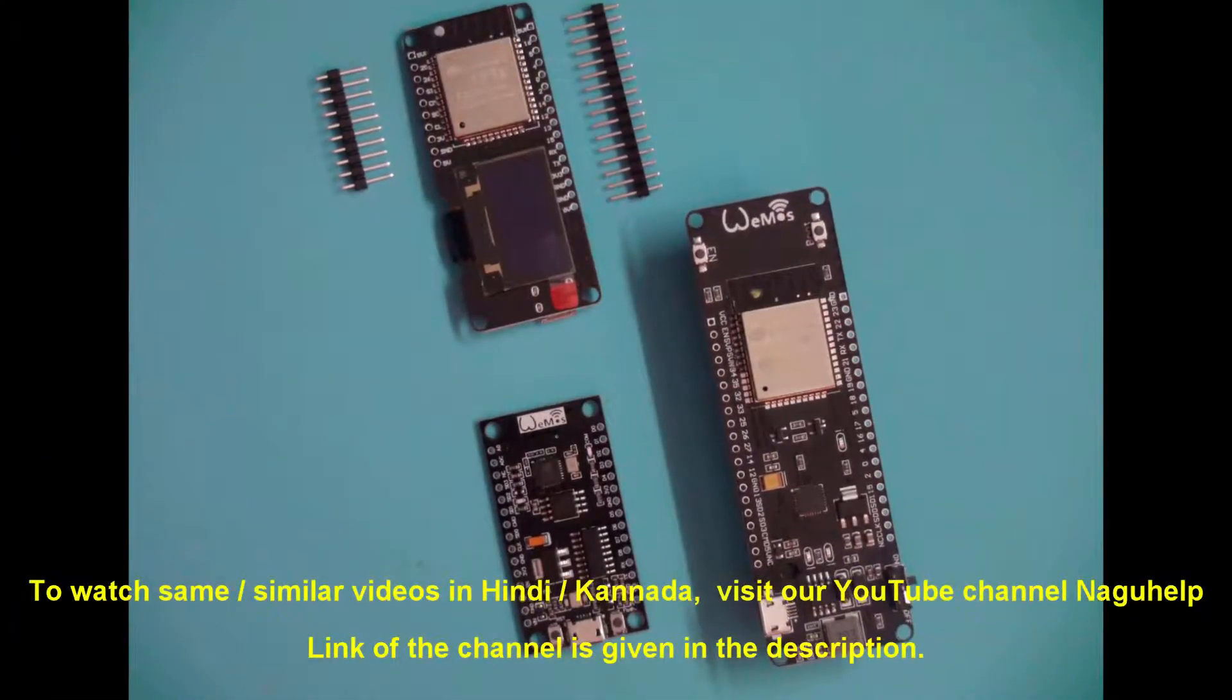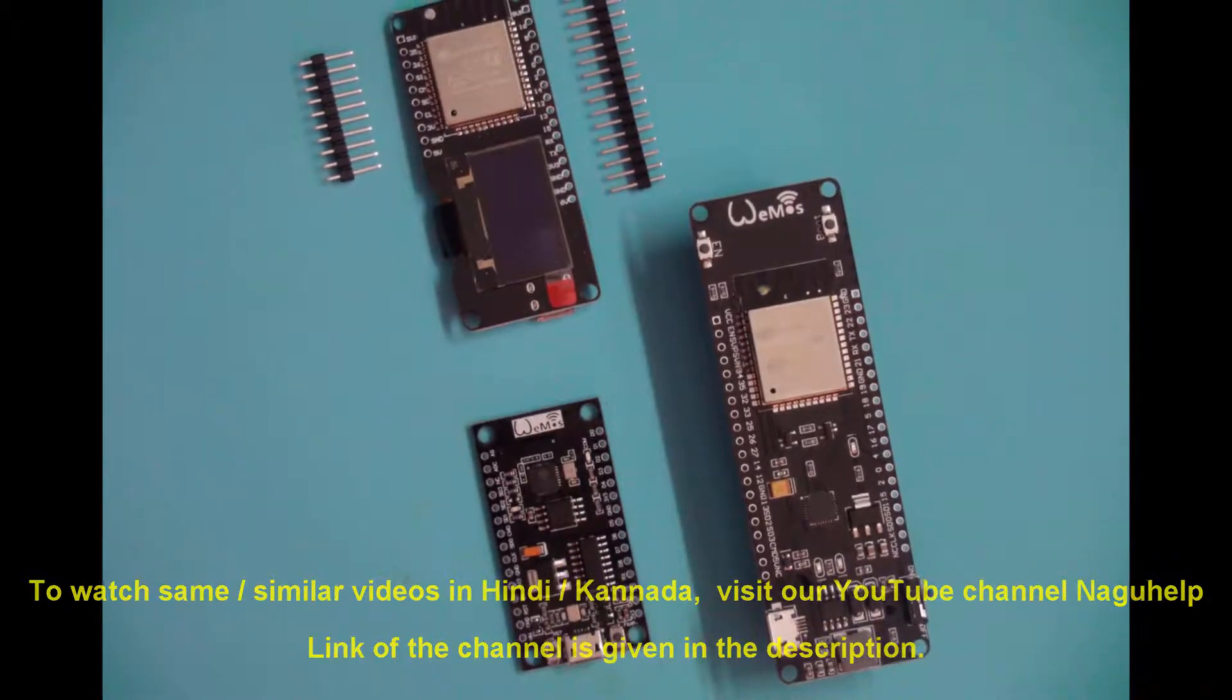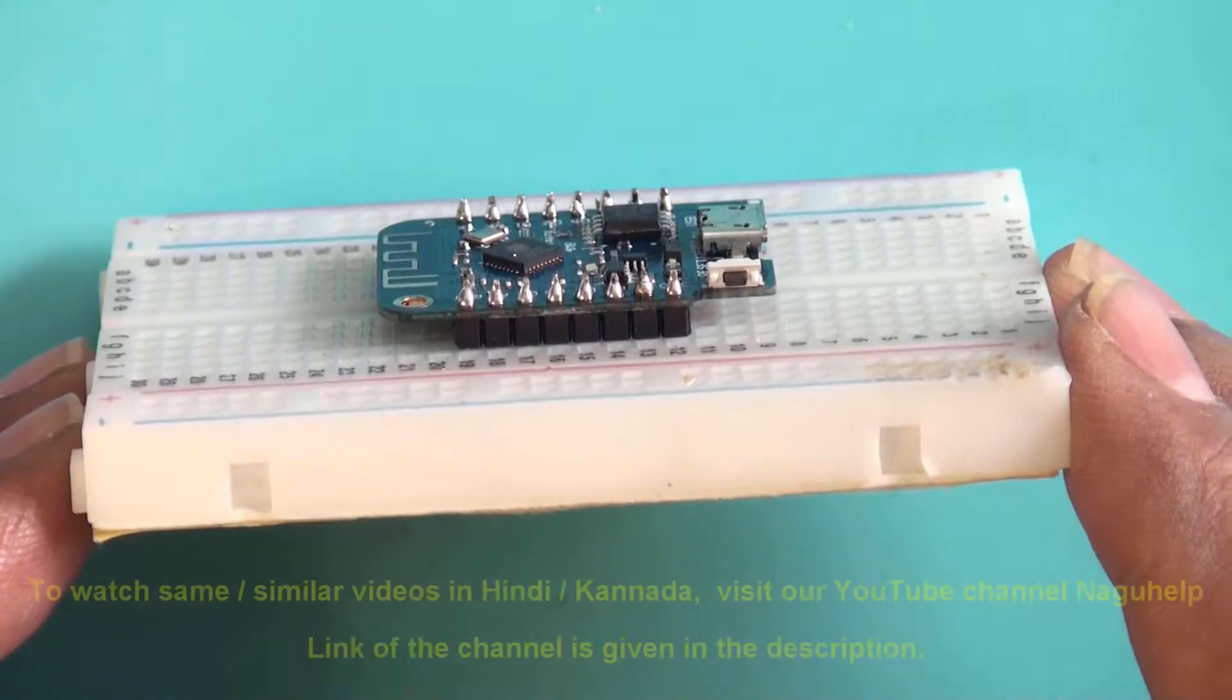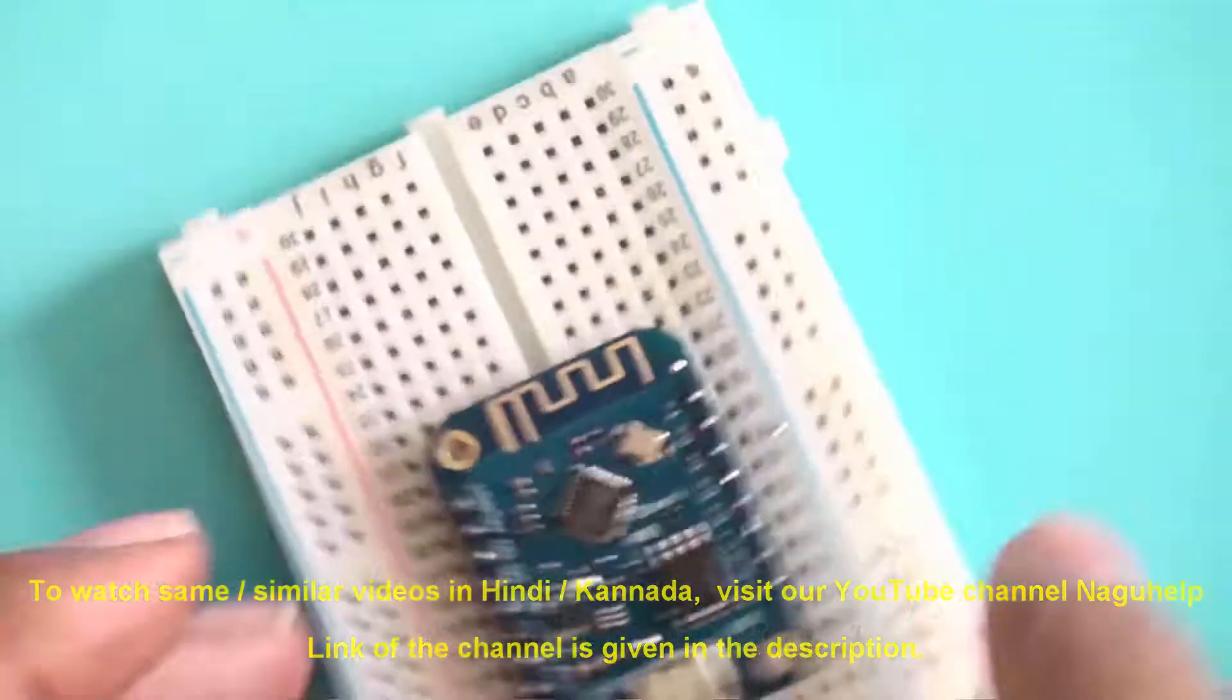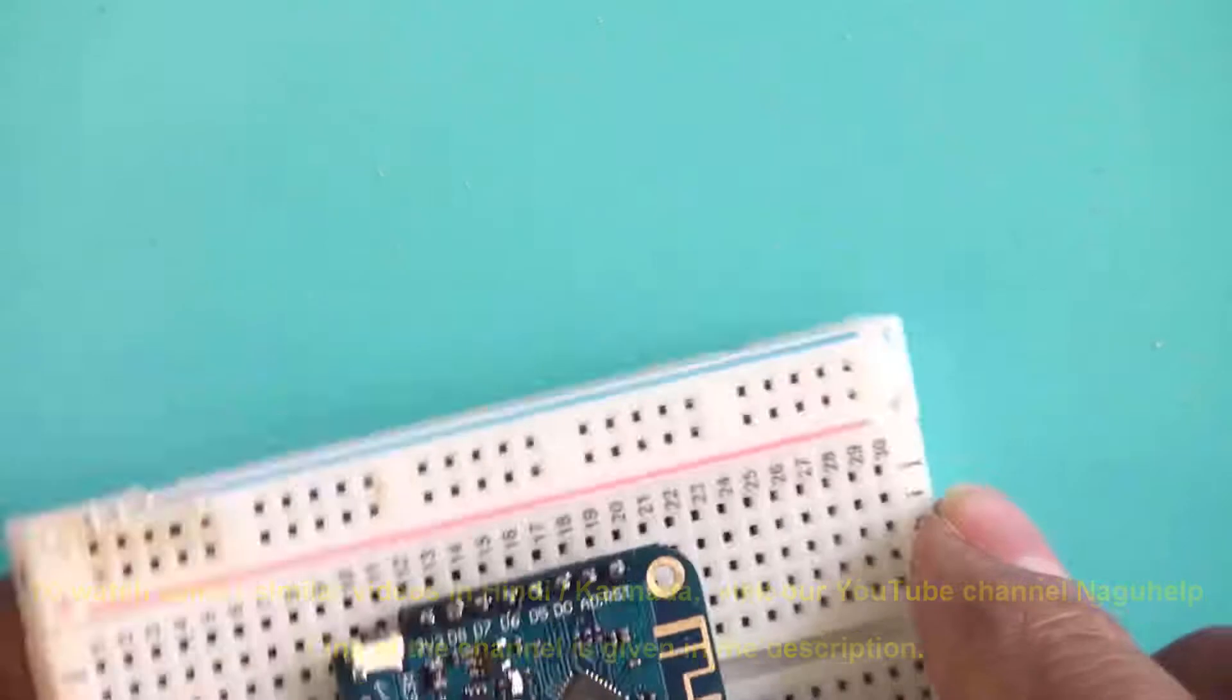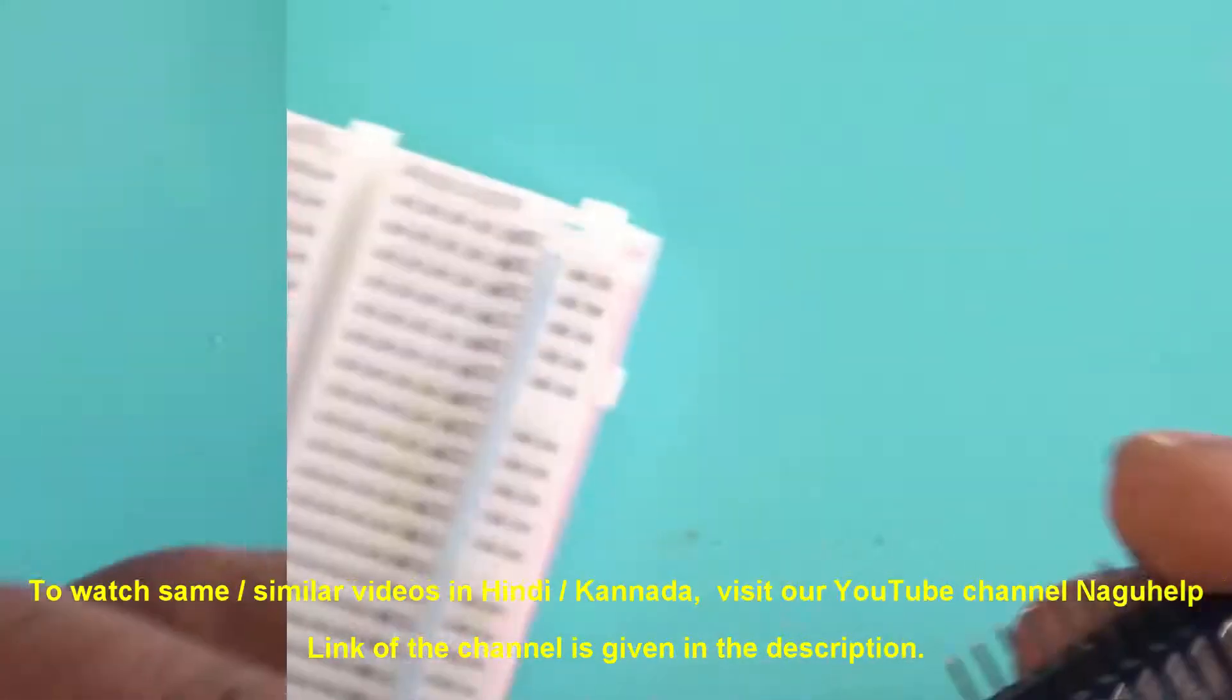Most of these microcontrollers do not come with soldered header pins and we need to solder them ourselves as per our end use. During soldering, if these pins are not properly spaced and vertically aligned with the modules, we cannot use them with breadboard or PCB. It's really difficult to desolder and rectify them.